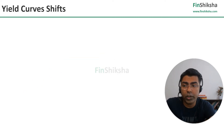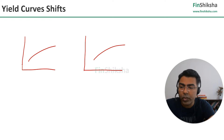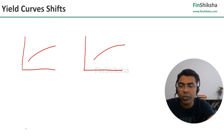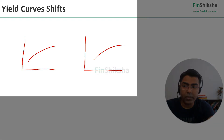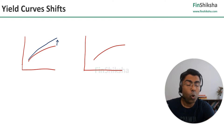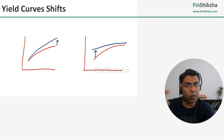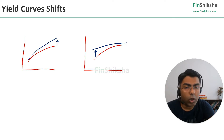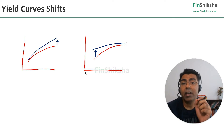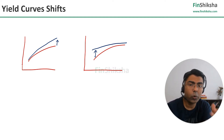There are other ways the Yield Curve can move. You could have non-parallel moves, which means you could either see the longer maturity yields go up more than the shorter maturity yields, or you could see the shorter maturity yields going up more than the longer maturity yields. These have relevant understandings and significance for us as analysts or investors looking at this data point.